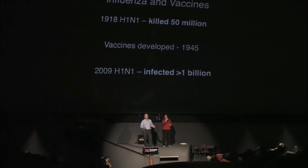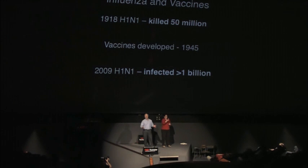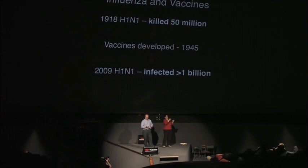Recently we were very surprised in 2009 with this so-called swine reassorted H1 virus, which infected about a billion people on the planet—probably a billion and a half. This was a pretty mild virus in terms of pathogenesis. If it had been as big a killer as the Spanish flu in 1918, things would have been much, much worse.